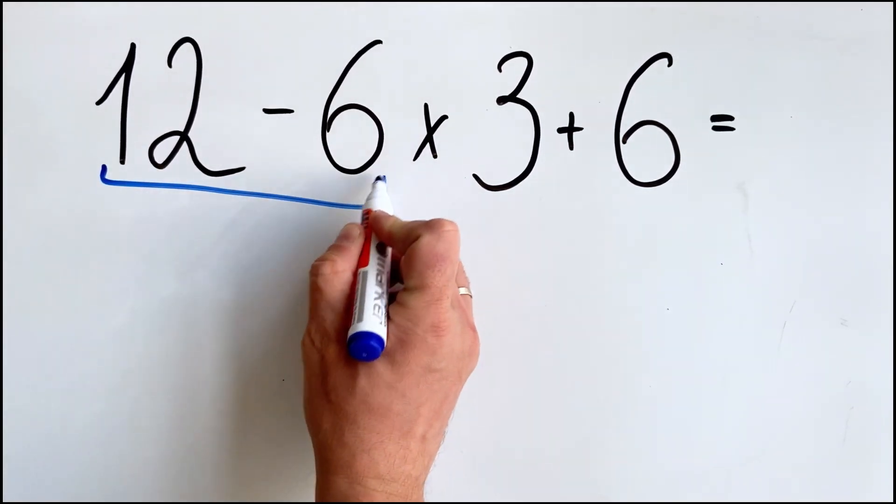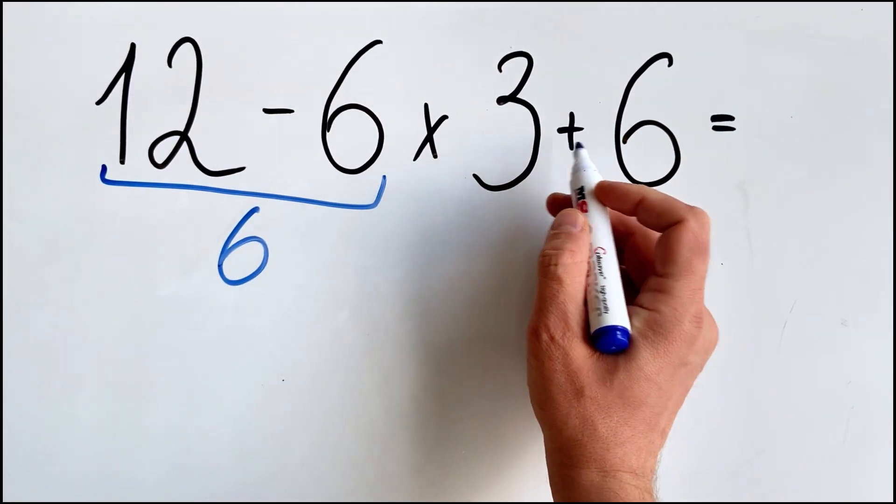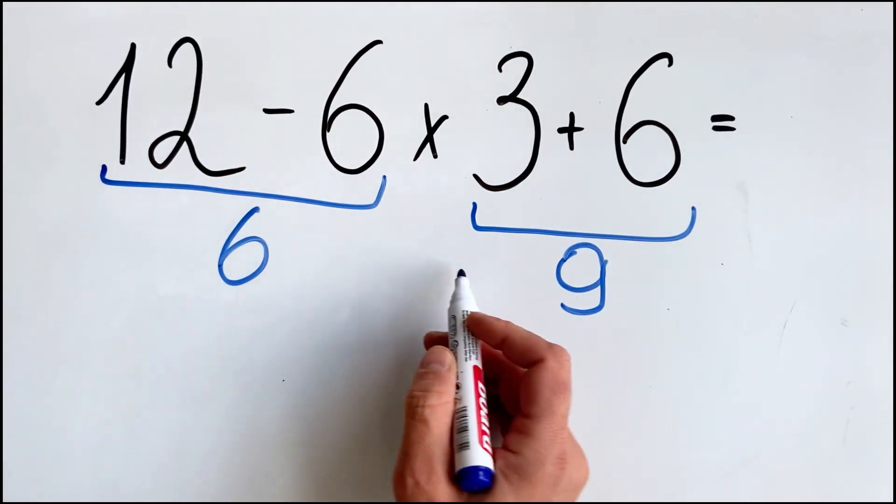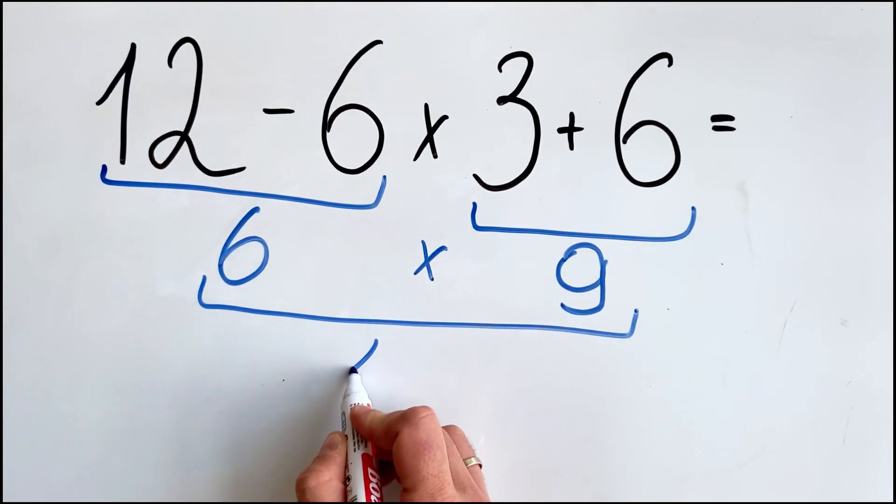12 minus 6 equals 6. 3 plus 6 equals 9. 6 multiplied by 9 is 54.